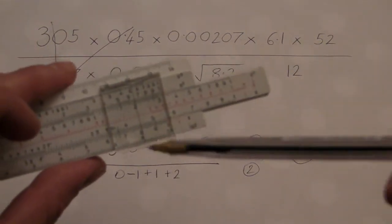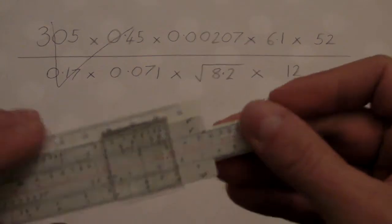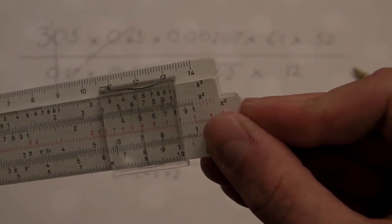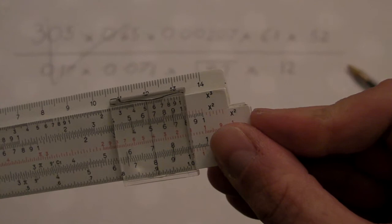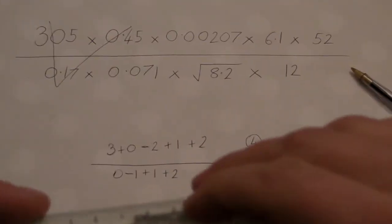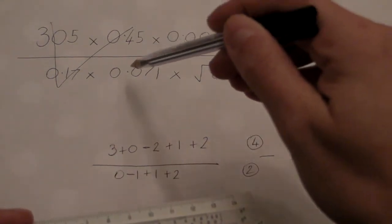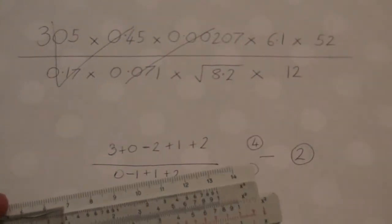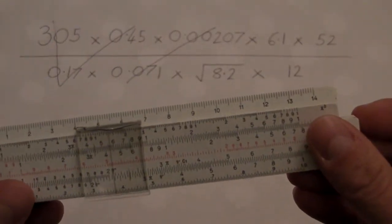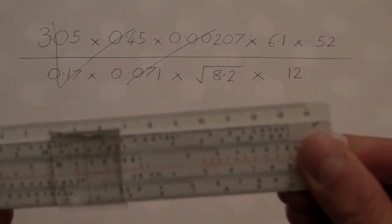So we've got our answer on the bottom line. We're going to carry on. We're going to divide that again by direct line-up by 0.71. And then times by 0.00207. That, then, is going to get divided by the square root of 8.2.